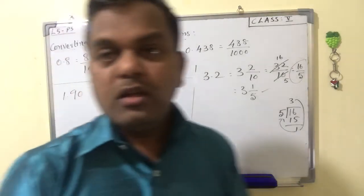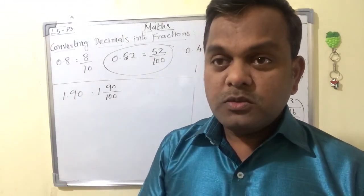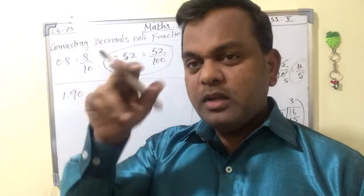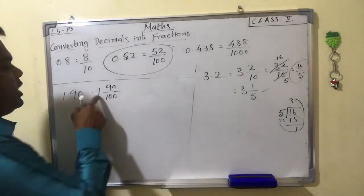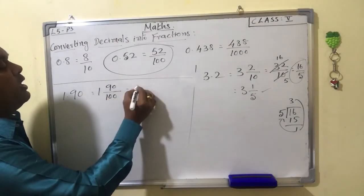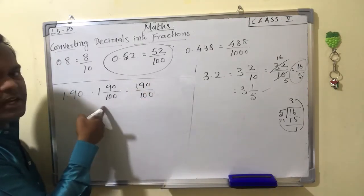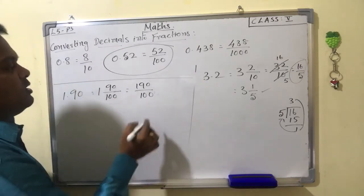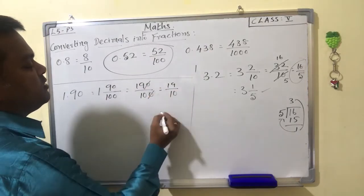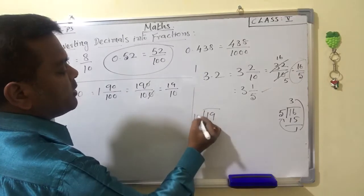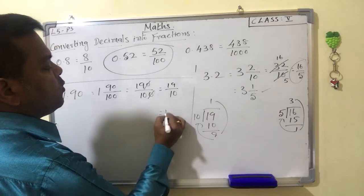This is a mixed number — convert into improper fraction, then simplify. 190 by 100: this zero and this zero we can cancel. Now we have 19 by 10. Then convert to mixed number: 1 times 10 is 10, balance 9. So the answer is 1 and 9 by 10.